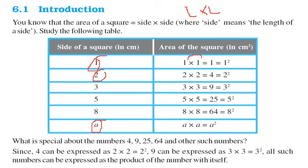So you observe that this is 1, 4, 9, 25, 64. What is special about these numbers? 4 can be represented as 2 into 2, that is 2 square. 9 can be represented as 3 into 3, that is 3 square. And these numbers can be expressed as the product of the number with itself. That is 5 into 5 means 5 multiplied by itself gives you 25, that is 5 square.